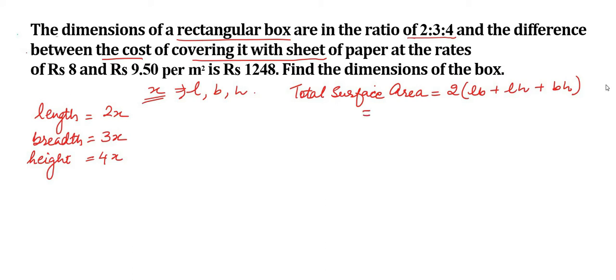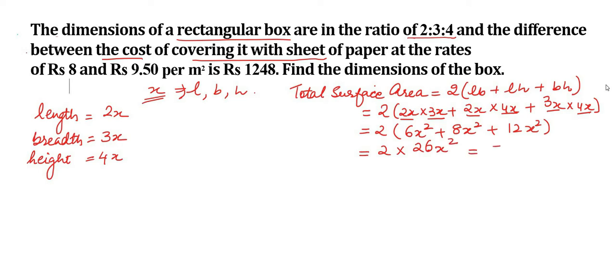This is equal to 2(2x × 3x + 2x × 4x + 3x × 4x) equal to 2(6x² + 8x² + 12x²) equal to 2 × 26x² equal to 52x². So 52x square is the total surface area of rectangular box.